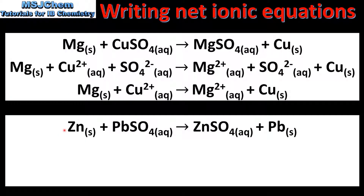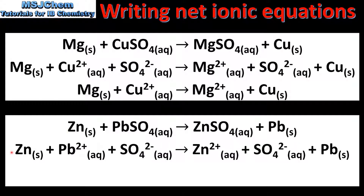In our next example we have the reaction of zinc and lead sulfate. So once again we start with the molecular equation. We then write the complete ionic equation. The aqueous lead sulfate has been broken down into lead 2+ ions and sulfate ions. The aqueous zinc sulfate has been broken down into zinc 2+ ions and sulfate ions.